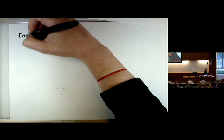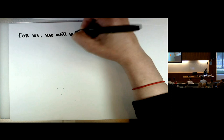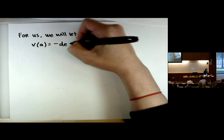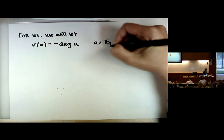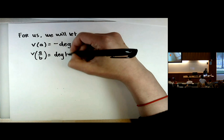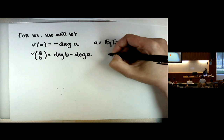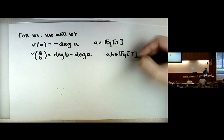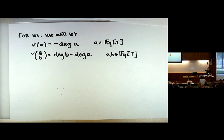For our field F_Q(T), we define the valuation of a polynomial A to be minus the degree of A, and for a ratio A/B, V(A/B) = deg(B) − deg(A). The valuation of the zero polynomial is ∞, as enforced by the definition. Let's check this is actually a valuation.